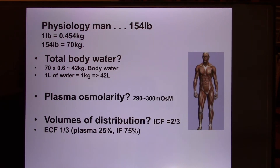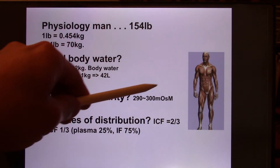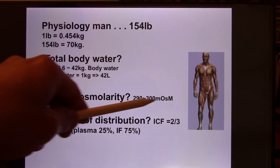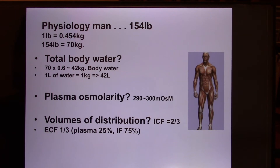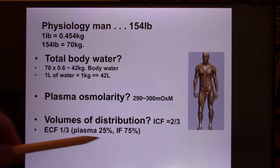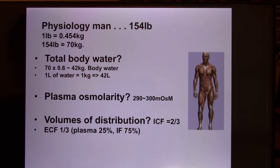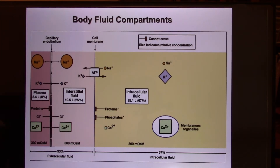Your plasma osmolarity — in physiology we use the unit OSM or milli-OSM, and you're going to learn how to calculate this. In those 42 liters of water, about two-thirds stay in your cells. Inside the cells we call it ICF — intracellular fluid. The one-third that stays outside we call ECF — extracellular fluid. In the ECF, about a quarter stays in your blood in the plasma part, and the other 75% are between cells — we call that the interstitial fluid.